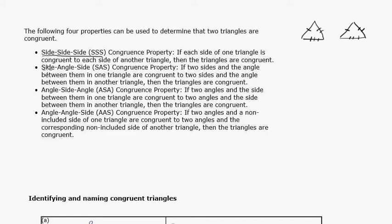Now, side, angle, side - that would be we have two triangles, and a side is equal, and then one angle is equal kind of next to it, and then the adjacent sides are equal. So this is called side, angle, side. This is side, side, side. Okay, so if that condition is satisfied, then they're congruent.